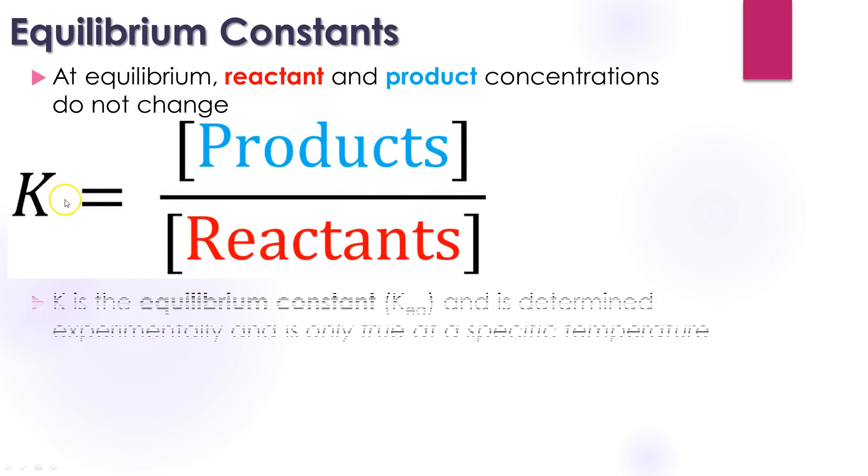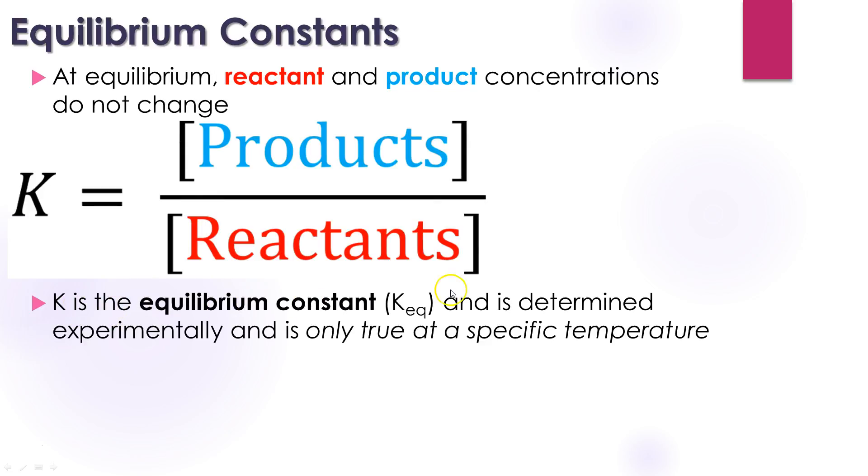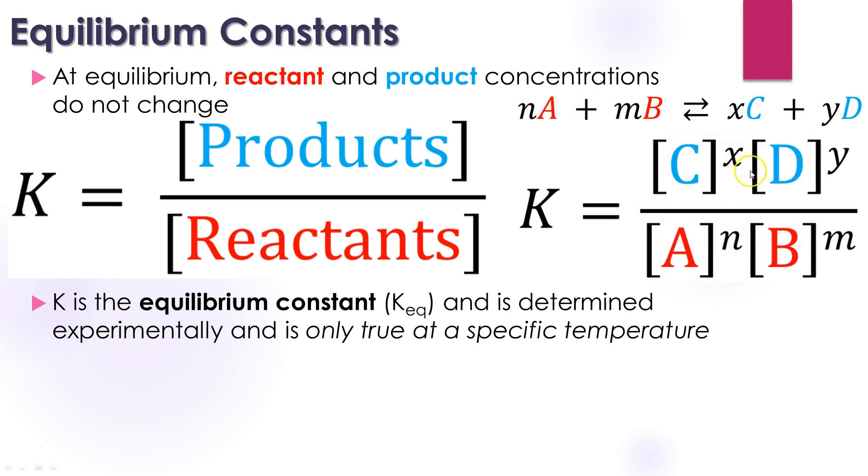The way we write it out is with K. K is called the equilibrium constant. You'll sometimes see it written K_EQ. And it's determined experimentally. You can't just know that one off the top of your head. You have to calculate it. And this is only true at a specific temperature. So let's take a sample equation we have here. nA plus mB is going to reversibly react to form xC and yD. So this is the coefficient for A plus the coefficient for B. Here's the coefficient for C and the coefficient for D.